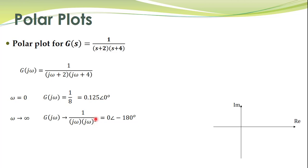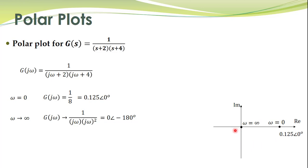In the complex plane, the point at omega equal to zero is 0.125 at angle zero, which lies on the positive real axis. The point at omega equal to infinity is a zero-length vector at angle minus 180 degrees, which is at the origin oriented toward the negative real side. Based on these two points, a rough sketch of the polar plot crosses the imaginary axis.